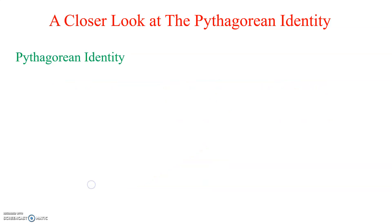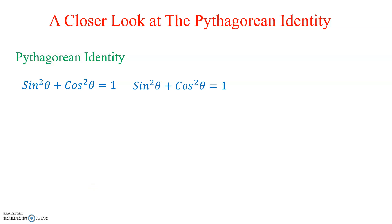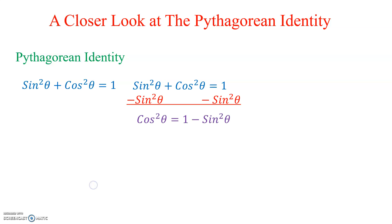Now when we look at the Pythagorean Identity — Sine squared Theta plus Cosine squared Theta equals 1 — we're going to do the same thing. If we subtract Sine squared Theta on both sides, we'd have a new version of the Pythagorean Identity.